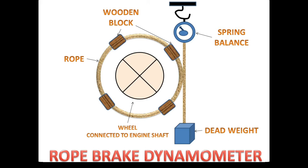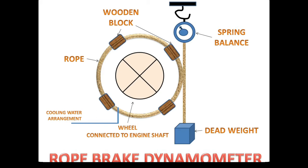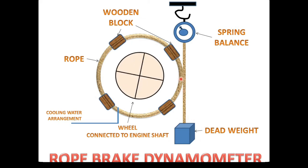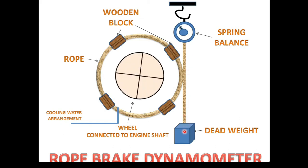The working of the rope brake dynamometer: because friction is produced, a cooling water arrangement is included. The pulley rotates, and when we increase the dead weight, the rope tightens on the wheel and stops it by producing a friction force in the opposite direction of the moving wheel. This friction force is equal to the spring balance reading shown on the meter.